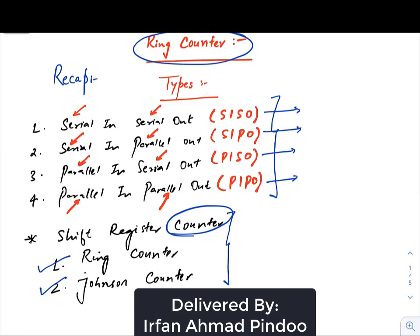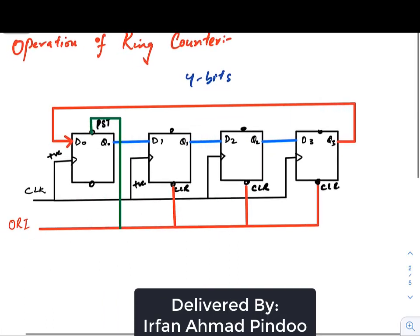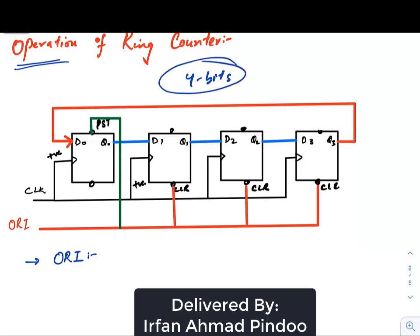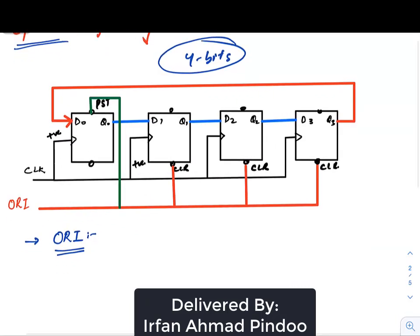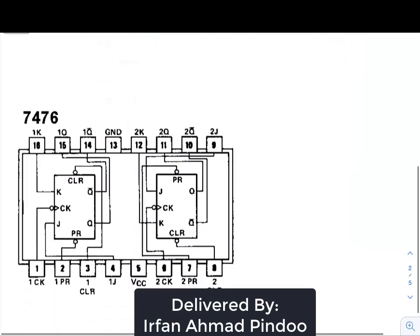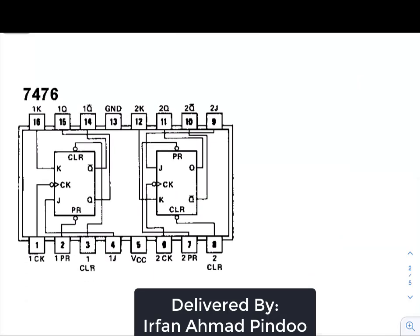Let us move on to the diagram. If we look at the diagram, there are some changes — you can see there's a word ORI being used here. In order to understand the operation of this ring counter, which we are designing for four bits, let us first study what this ORI is. To understand the purpose ORI is serving in this particular diagram, let us understand this IC.